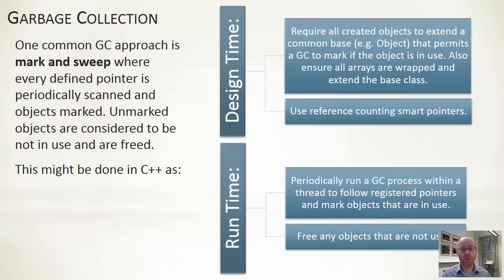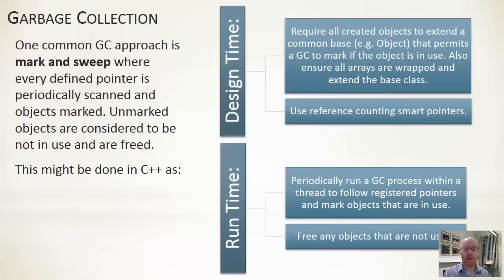The second component is the sweep process. You then scan through all of the objects you have allocated — the data on your heap. If you find an object on the heap that isn't marked, meaning nothing has claimed it or said it's being used, then you free it up and release that memory. You may or may not take actions based on that release, and you may want to restructure the memory on the heap afterward to remove holes from it.